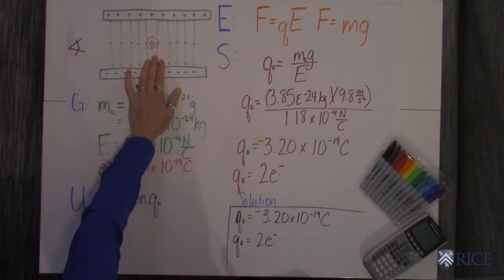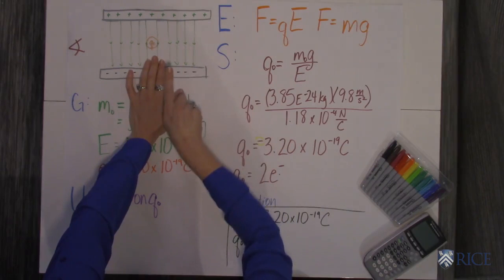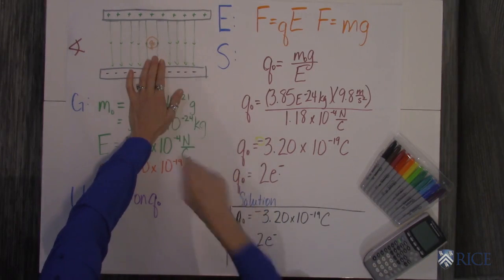The problem actually states that this particle is suspended. There's a couple of things you know about it. You know that the field is going downward, so if it's suspended, it has to be negative.